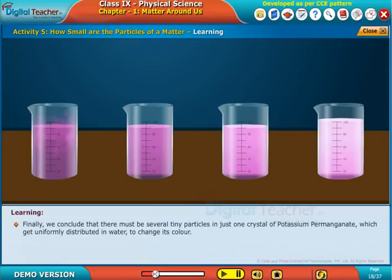Finally, we conclude that there must be several tiny particles in just one crystal of potassium permanganate which get uniformly distributed in water to change its color.